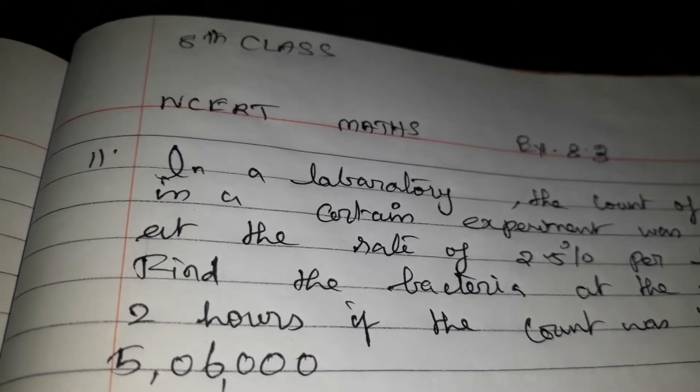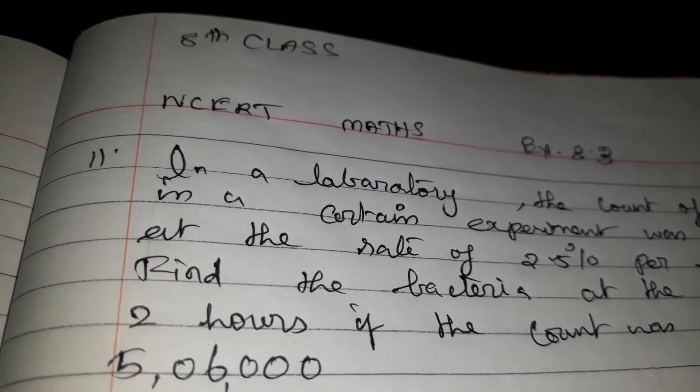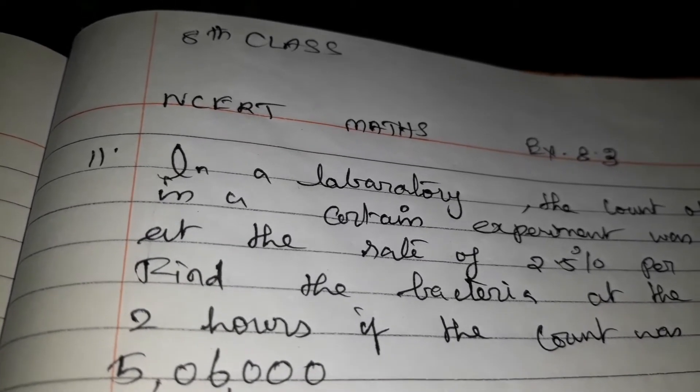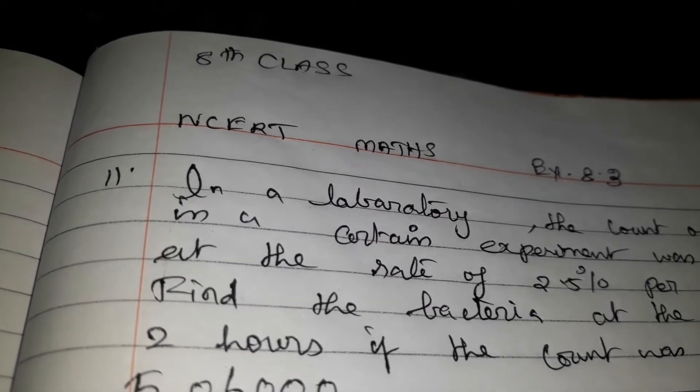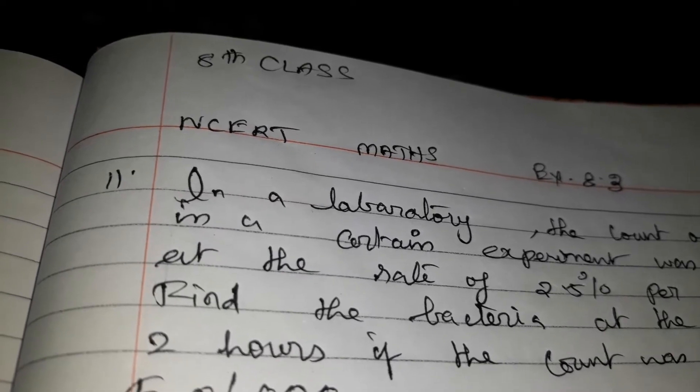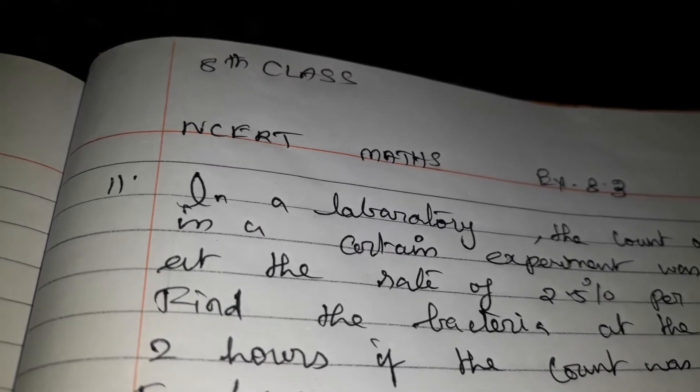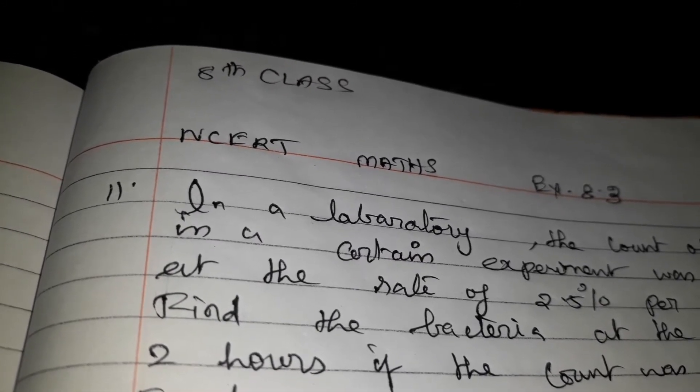In a laboratory, the count of bacteria in a certain experiment was increasing at the rate of 2.5% per hour. Find the bacteria at the end of 2 hours if the count was initially 56,000. So initially, there are 56,000.